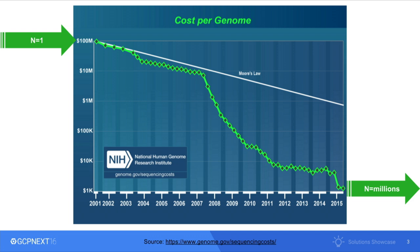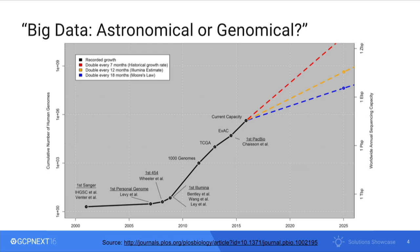This is a slide the National Institutes of Health has been maintaining for the last couple of decades showing a plummeting cost of producing one human genome. The takeaway is it's going down. What generally happens when prices go down is volume goes up, and that is indeed what's been happening. The word 'astronomical' is passé — the new word for big should be 'genomical,' as projections show data growing from petabase pairs to exa to zeta on a log scale.